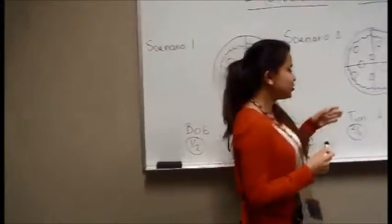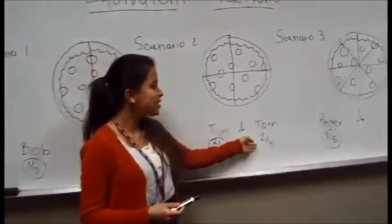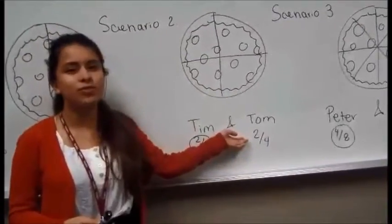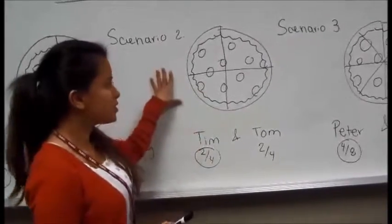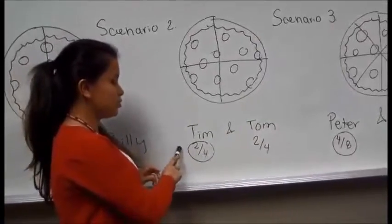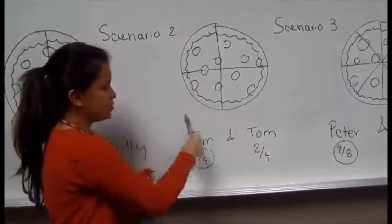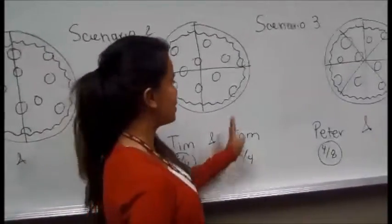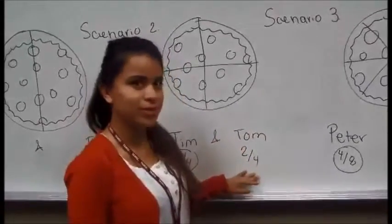In the second scenario, we have Tim and Tom, and they decide that they want to cut it in four slices. Because they still want to share it equally, they decide that each of them is going to get two. So Tim is going to get two out of the four, and Tom is going to get the other half, two out of the four.